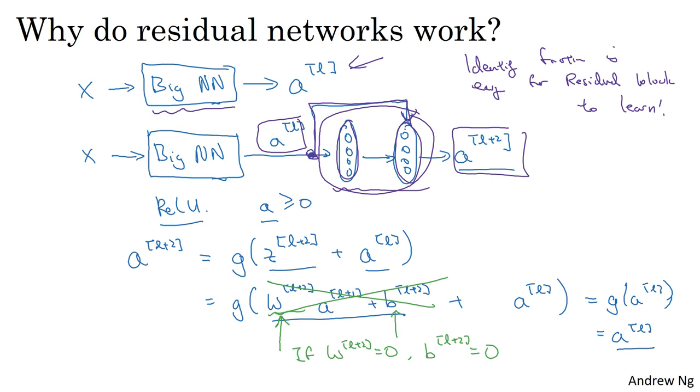So one more detail in the residual network that's worth discussing, which is through this addition here, we're assuming that ZL plus two and AL have the same dimension. And so what you see in ResNet is a lot of use of same convolutions so that the dimension is equal to the dimension of this layer or of the outputs layer. So they can actually do this short circuit connection. Because the same convolution preserves dimensions, and so it makes it easier to carry out this addition of two equal dimension vectors.